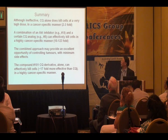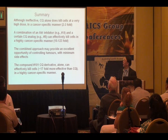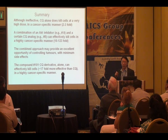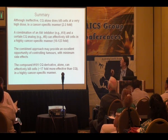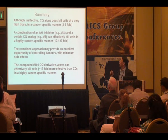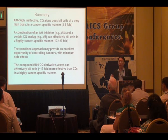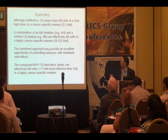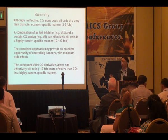In summary: although inefficient alone, chloroquine can kill cells at very high doses in a manner very specific to cancer cells. The combination of an AKT inhibitor — such as compound A — and chloroquine analog compound 5 can effectively kill cancer cells in a highly cancer-specific manner. This combined approach provides excellent tumor control with minimum side effects.